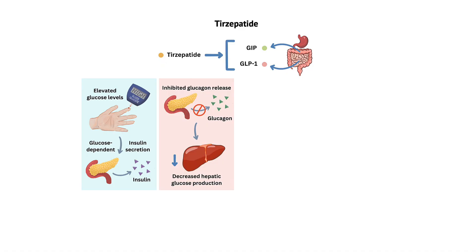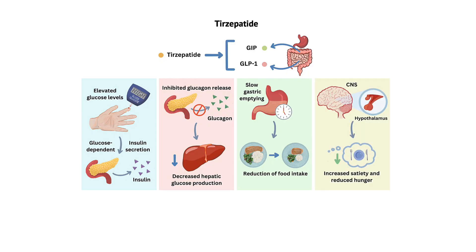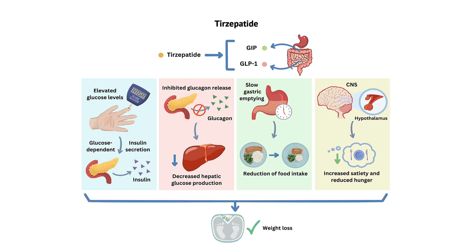Number three, delayed gastric emptying: by slowing down gastric emptying, tirzepatide prolongs the feeling of fullness after a meal, which can help reduce overall food intake and promote weight loss. Number four, increased satiety signaling: tirzepatide exerts its appetite-suppressing effects by enhancing satiety signaling in the central nervous system, specifically in the hypothalamus, resulting in reduced hunger sensations and decreased food intake. Overall, tirzepatide's dual agonism of both GIP and GLP-1 receptors leads to better glycemic control and weight loss by enhancing insulin secretion, suppressing glucagon secretion, delaying gastric emptying, and increasing satiety signaling.